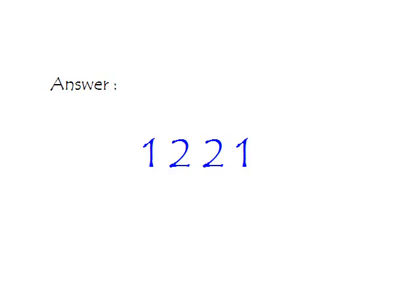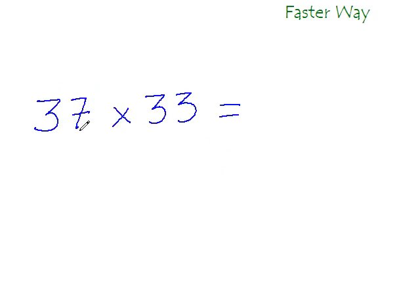In order to multiply 37 with 33, all you need to do is multiply 3 with the number that comes after it. What comes after 3 in counting? 4, isn't it? So 3 times 4 is 12, and you have the first two digits of your answer.